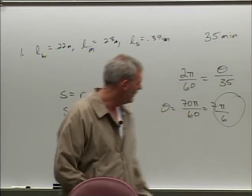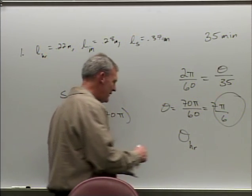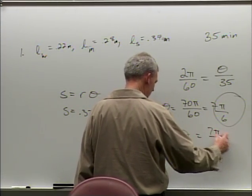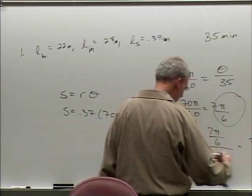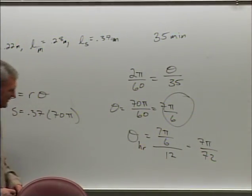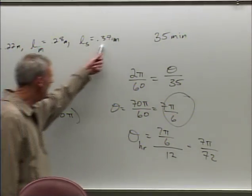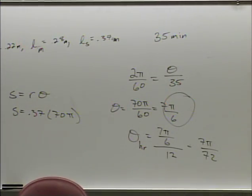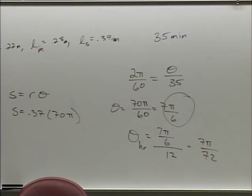For the hour hand: it covers one-twelfth the distance the minute hand does in the same time. So take the minute hand's theta of 7π/6 and divide by 12, giving 7π/72. Of course your actual radii are different, so plug in the appropriate values for each hand.